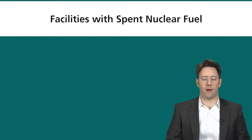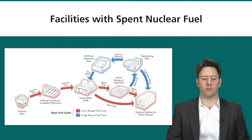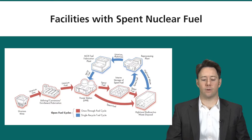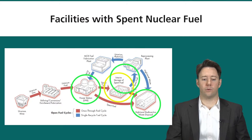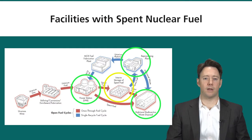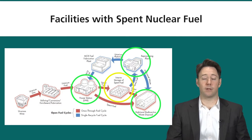Looking at the nuclear fuel cycle to identify facilities with spent nuclear fuel: the cycle begins with uranium mining and goes through enrichment, fabrication, operation in power reactors, all the way through to either high-level waste disposal or reprocessing. Spent nuclear fuel originates at nuclear reactors and can be transferred to interim storage, directly to high-level radioactive waste disposal, or to a reprocessing plant where it's made into MOX fuel — though once reprocessed, it is no longer spent fuel.